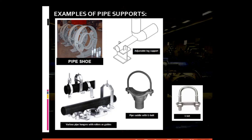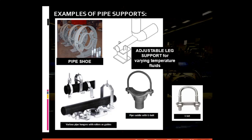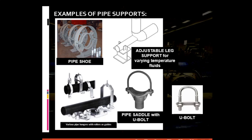Another example of a pipe support is the pipe shoe — similar to a shoe where the pipe is inserted inside, hence the term shoe. We also have an adjustable leg support for varying temperature fluids. When the temperature of the fluid changes, a rigid kind of support is not suitable, so thermal movement must be allowed. We also have a U-bolt, a pipe saddle with a U-bolt as rigid pipe supports, and pipe hangers with rollers, which are examples of pipe supports that accommodate thermal motion or thermal movement.